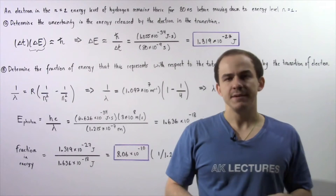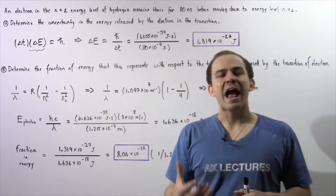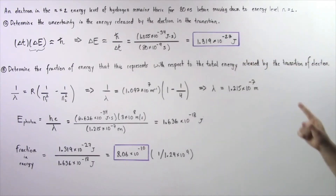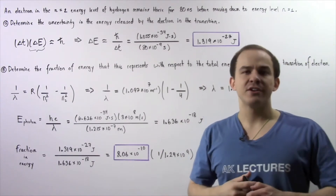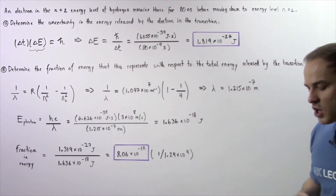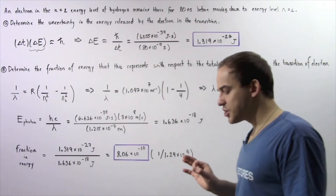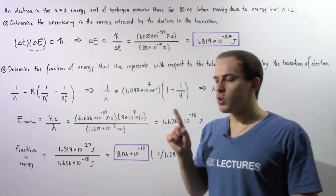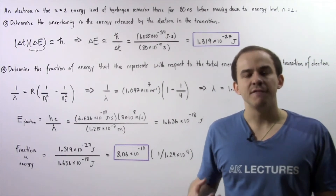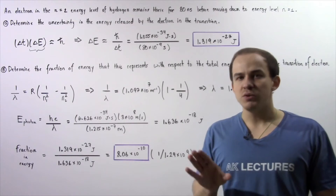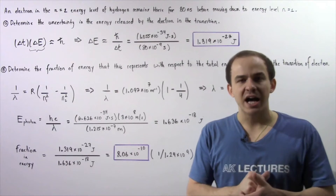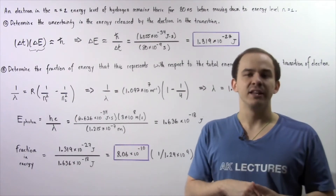Now let's move on to part B. In part B, we want to determine the fraction of energy that this uncertainty represents with respect to the total energy released by that electron during the transition. When that electron jumps from n equals 2 to n equals 1, it releases a photon of energy. First, we want to calculate how much energy is stored within that photon, and then we want to calculate the fraction.